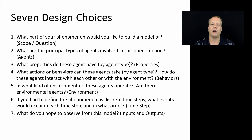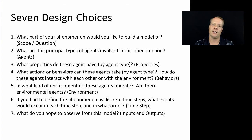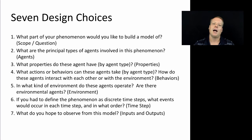The first one is: what part of your phenomenon would you like to build a model of — this is asking the scope question. Then: what are the principal types of agents involved, what properties do these agents have, what actions or behaviors can these agents take, how do these agents interact with each other or with the environment, and what kind of environment do these agents operate in. Are there environmental agents — agents that actually take action but may not be moving, or may be placed in environments around the other agents. And if you had to define the phenomenon as discrete time steps, what events would occur in each time step and in what order, and what do you hope to observe in this model.